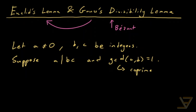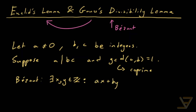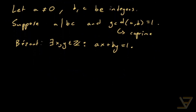What we're going to do is use Bézout's lemma. What Bézout tells us is that there exist X and Y in the integers such that AX plus BY is equal to 1. We're going to do a little trick here: we're going to multiply the equation through by C, so we get ACX plus BCY is equal to C.